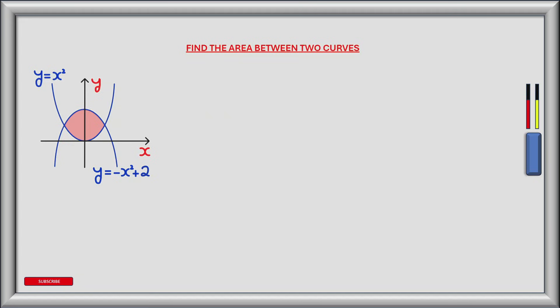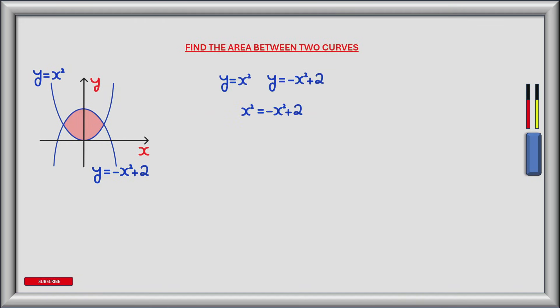The first step in finding the area of the red region is to find the x coordinates of where the two curves intersect. To do this we can equate the two equations and find the values of x at the points of intersection. Equating the two equations gives x squared is equal to minus x squared plus 2.